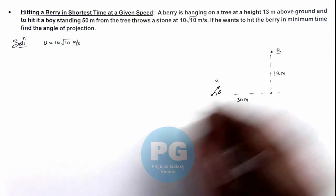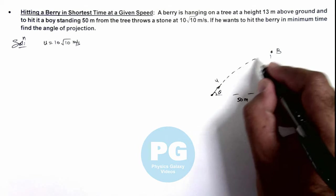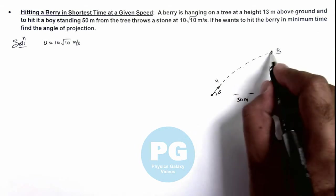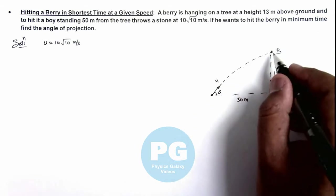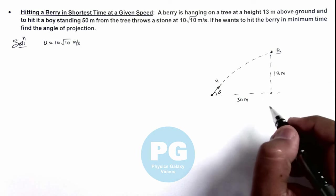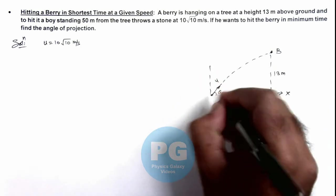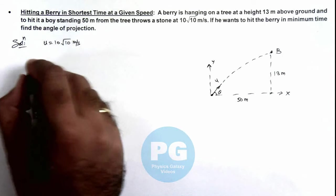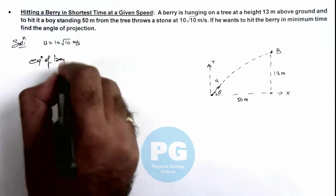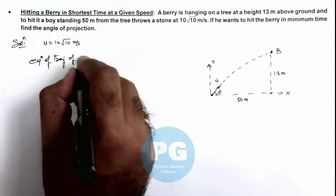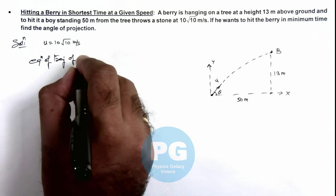So to hit the berry, the coordinates of berry must satisfy the equation of trajectory of the stone. So in this situation, if we take this direction as x axis and this direction as y axis, we can write the equation of trajectory of stone.